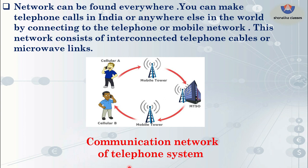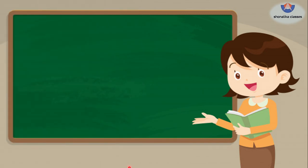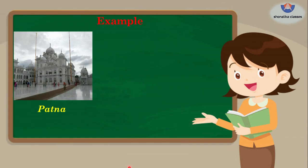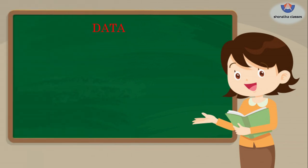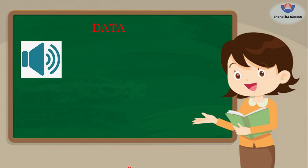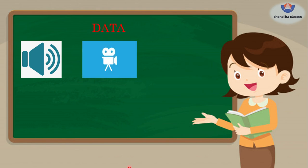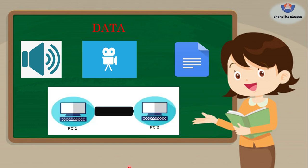Now let us see an example from our day-to-day life to explain what networking is. Suppose we want to go from Patna to Delhi — we need a roadway, which is the path to reach the destination. In the same way, data — which can be in any form such as audio, video, or files — requires a pathway to move from one system to another in a computer network.